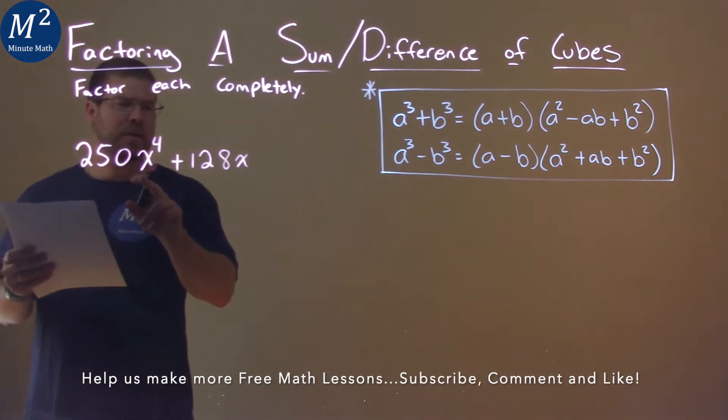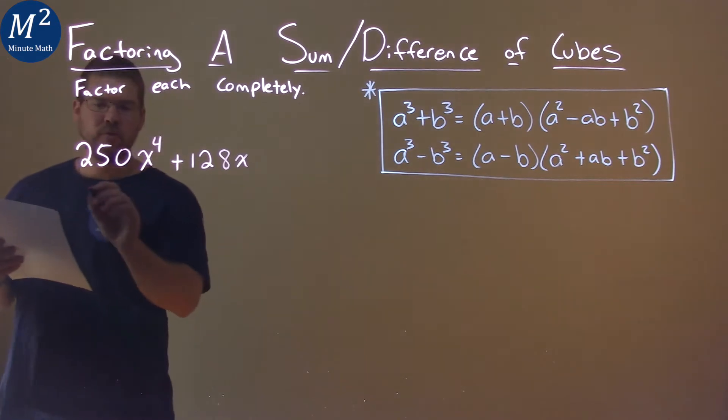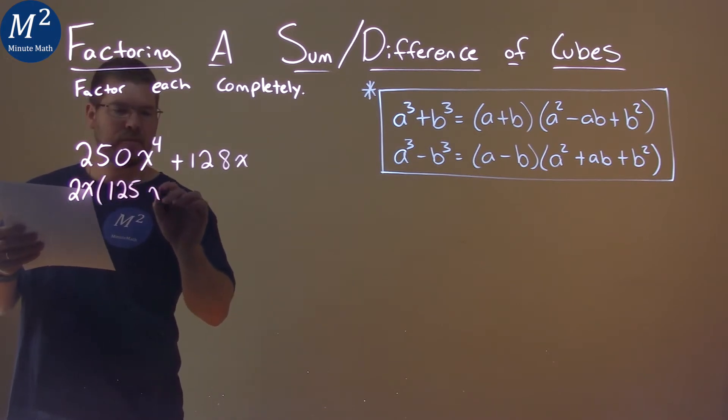One thing I noticed first is that there is an x in both parts and the number 2. So I want to pull out a 2x from both parts, and what am I left with? Well, 250 divided by 2 is 125, and then we have an x to the third,